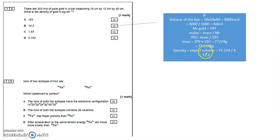So my mass is 77.224 divided by my volume of 4 decimeter cubed, 19.3. The answer is B.